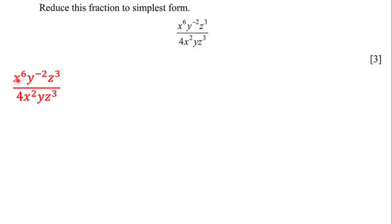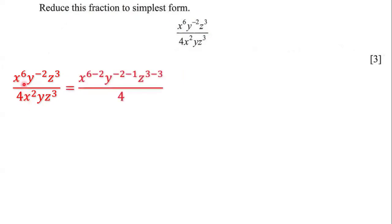Notice that we have x to the 6 and we have x squared. These two terms have the same base, and whenever we have two terms with the same base and we're dividing them, we have to subtract the powers. So we're going to write x to the power of 6 minus 2, because we subtract the exponents.